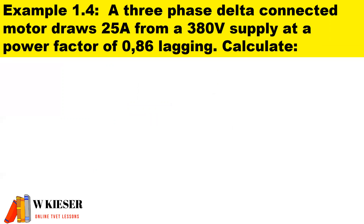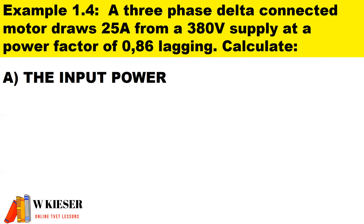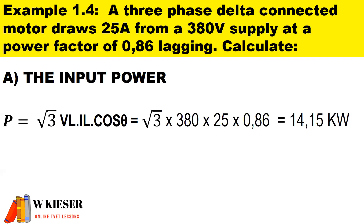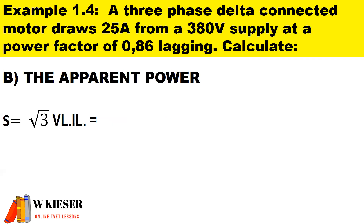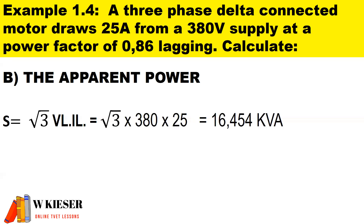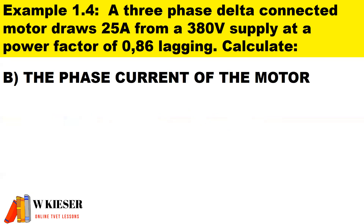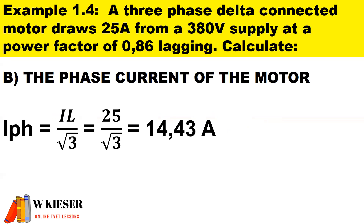Example 1.4: a three-phase delta connected motor draws 25 amps from a 380 volt supply at a power factor of 0.86 lagging. To determine input power, multiply by square root 3 (three-phase circuit): √3 × 380 × 25 × 0.86 = 14.15 kilowatts. The apparent power (S) is √3 × 380 × 25 = 16.454 kilovolt-amps. For a delta connected motor, the phase current is IL divided by √3: 25 ÷ √3 = 14.43 amps.